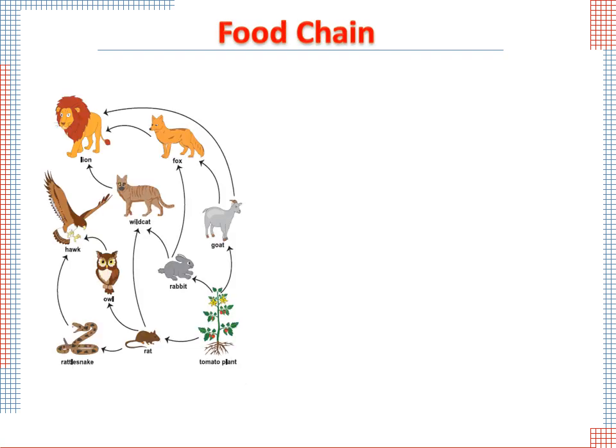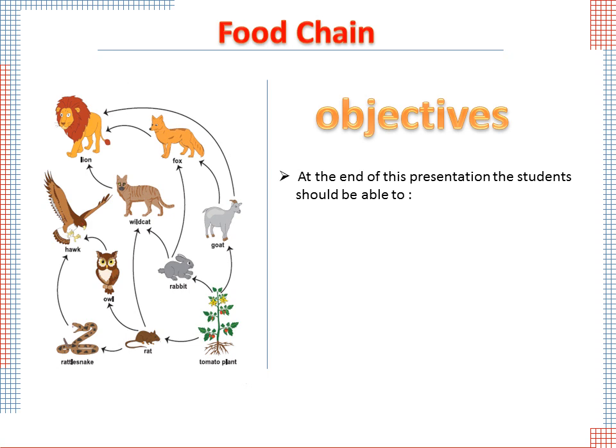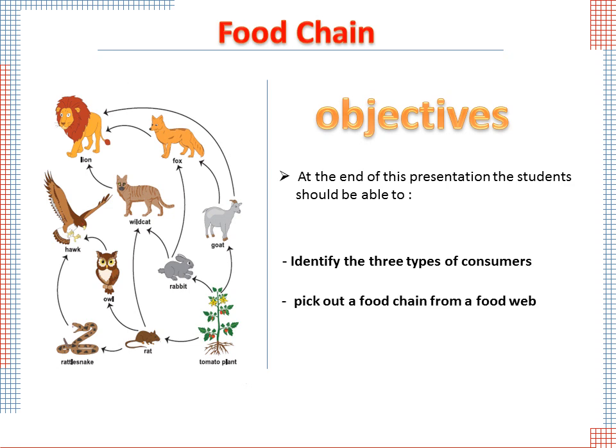Our lesson today is about food chain. At the end of this presentation, students should be able to identify the three types of consumers, pick out a food chain from a food web, and give the effects of losing any component in the food chain.